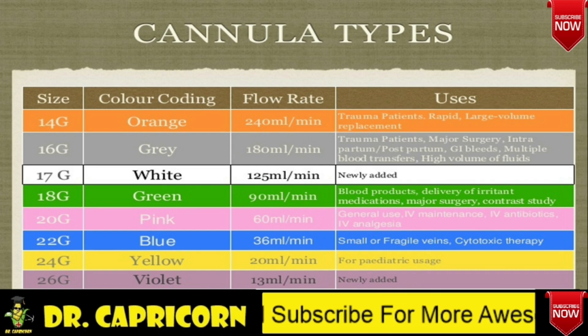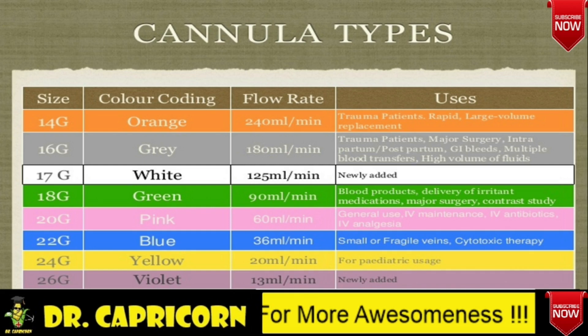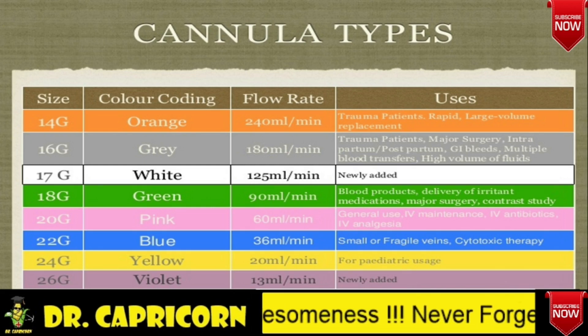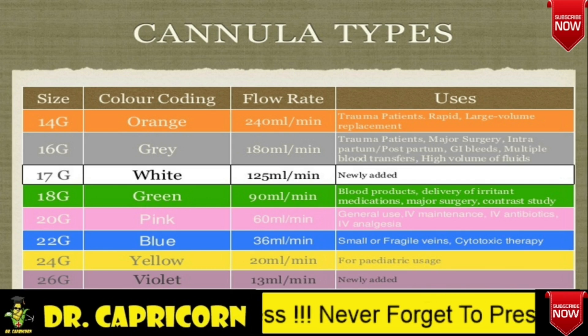Blue has a flow rate of nearly 35 milliliters per minute, used for small and fragile veins and also in cytotoxic therapy. Yellow, being a thin cannula, is used in pediatrics. Violet is a newly added one.